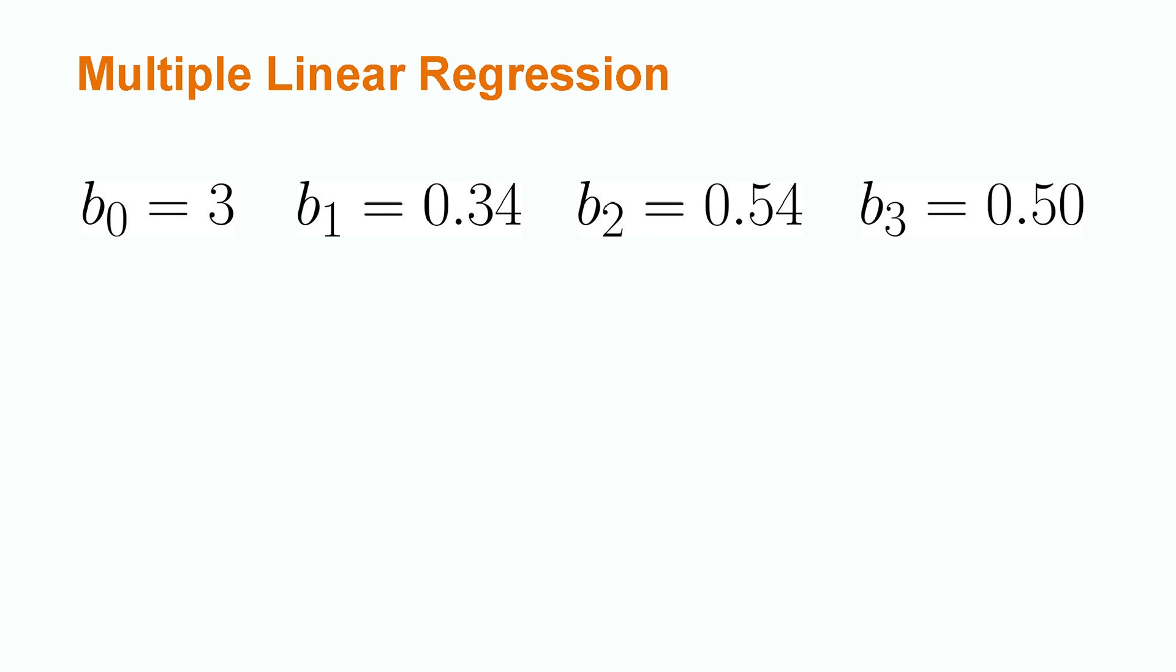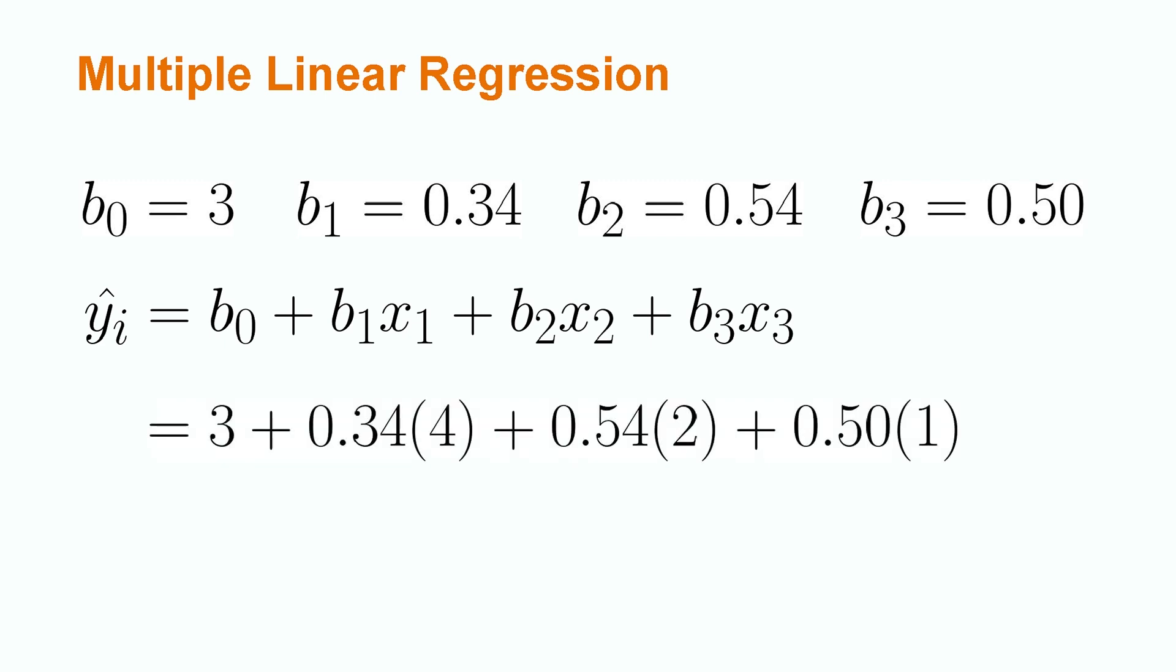What would the mental health rating of someone who exercises four days a week, has two close friends, and attends therapy one day a week be? Using our regression equation, we plug in each value of b and obtain a mental health rating of 5.94.